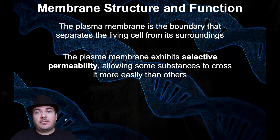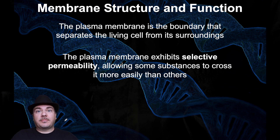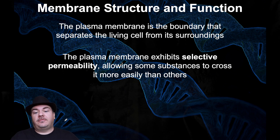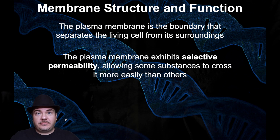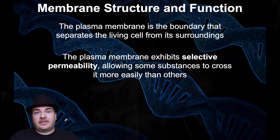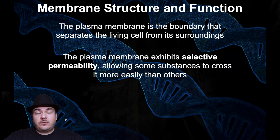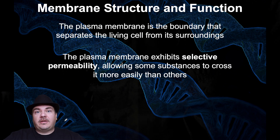Let's begin by discussing the basic structure of membranes. The plasma membrane is the boundary of the cell, the barrier that separates what is the cell from what is not the cell — from the environment around the cell. The plasma membrane exhibits selective permeability, meaning some things can cross the plasma membrane and other things cannot. The cell needs to bring in food, energy, and oxygen, and must get rid of waste products like carbon dioxide.